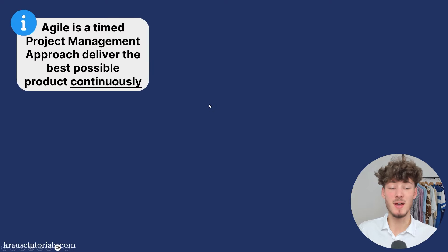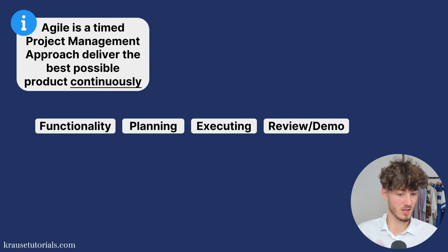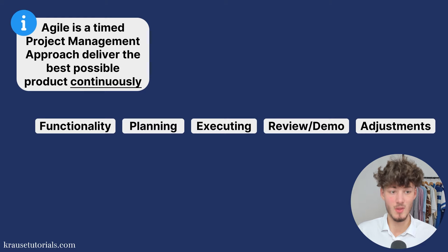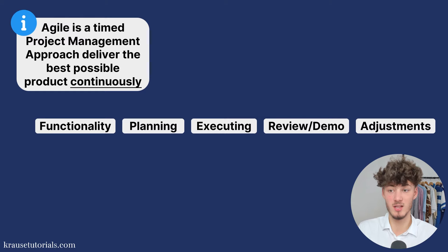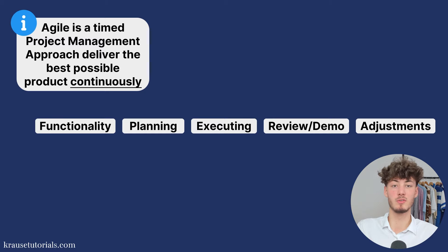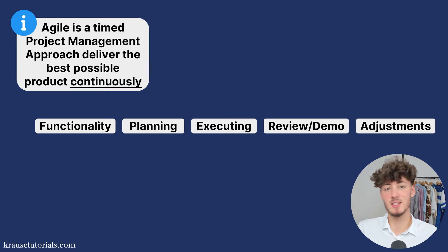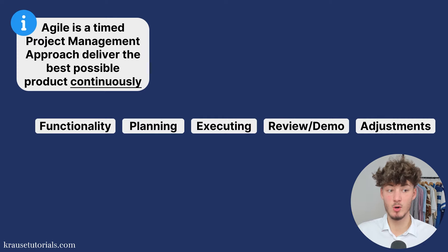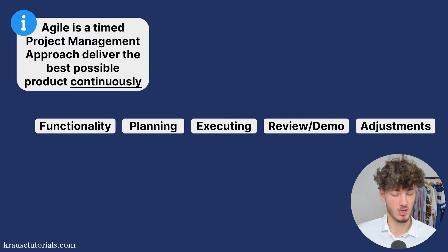What does agile actually mean? Agile is a project management approach which involves breaking down your projects into different phases. The goal of an agile process is the continuous collaboration and improvement of your project. The direct contrary to this would be the waterfall model, where each phase must be completed before stepping to the next, resulting in a lot of downtime. The agile process is way more iterative and incremental, which is why nowadays basically all of the big players use an agile process rather than the waterfall model.